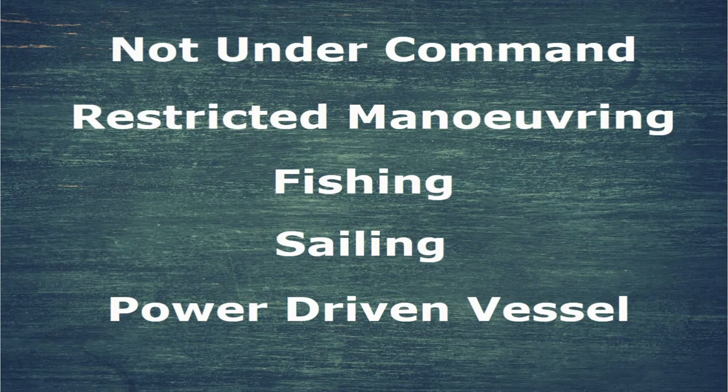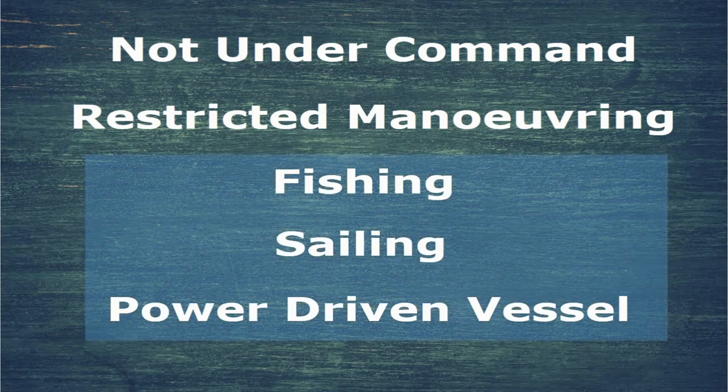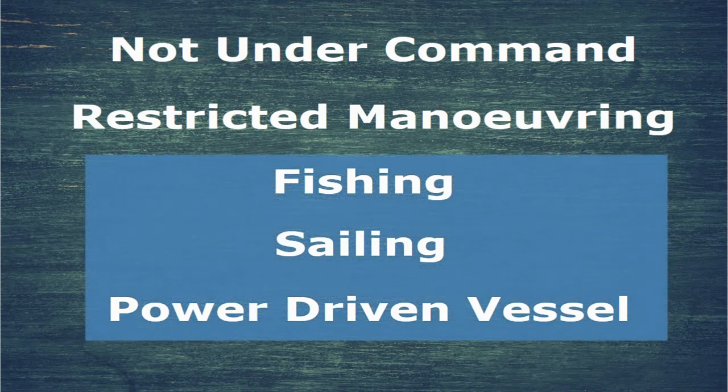That brings us to the end of rule 18. We've established the hierarchy of vessels, seen how the bottom three vessels in that hierarchy need to avoid impeding the safe passage of a vessel constrained by draft, and seen how it all works together in the diagram — showing what rule 18 requires when two different vessels are approaching.